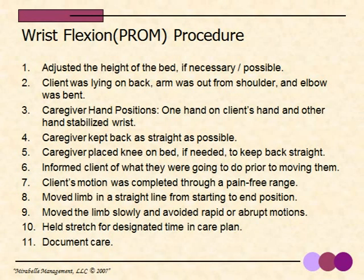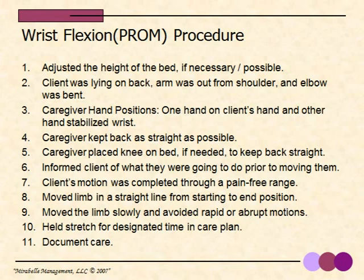Let's look at the wrist flexion procedure. First: adjust the height of the bed if necessary. Two: client lying on their back, arm out from the shoulder, and elbow bent. Three: caregiver hand positions — one hand on the client's hand, the other stabilizing the wrist. Four: caregiver kept back as straight as possible. Five: caregiver placed knee on bed if needed. Six: inform the client prior to moving them. Seven: motion completed through a pain-free range. Eight: move the limb in a straight line. Nine: move slowly, avoid rapid motions. Ten: hold for the designated time. Eleven: document the care.